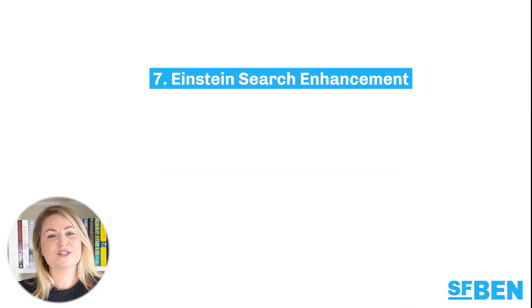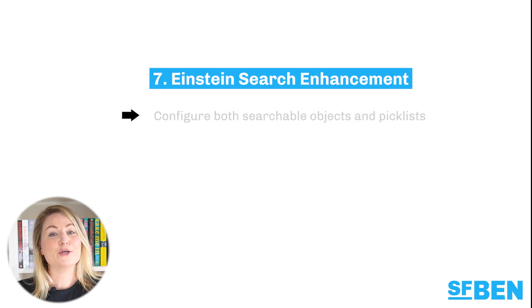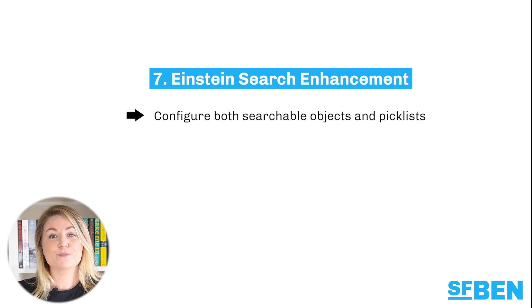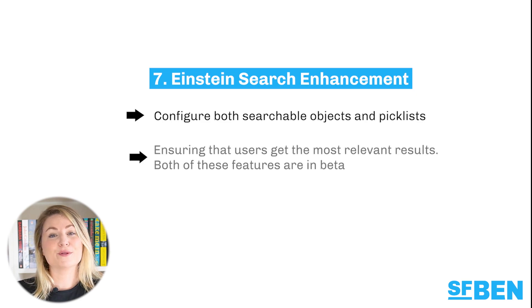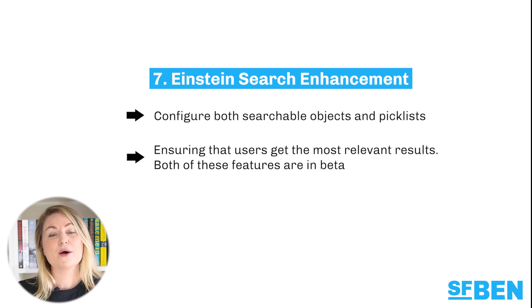Einstein Search gets two notable updates in the Summer 23 release. You can configure both searchable objects and picklists, ensuring that users get the most relevant results. Both of these features are in beta.